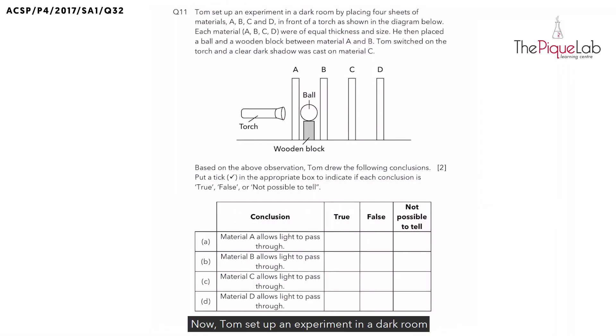Tom set up an experiment in a dark room by placing four different sheets of materials A, B, C and D in front of the torch as shown in the diagram below. Each material was of equal thickness and size, and then he placed a ball and a wooden block between material A and B. When he switched on the torch, he observed a clear dark shadow that was cast on material C.